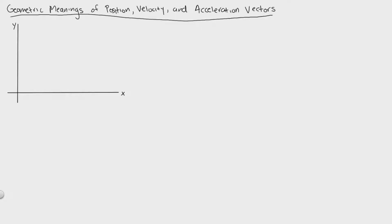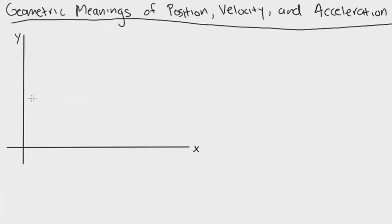Welcome back everybody. Today we'll be talking about the geometric meanings of position, velocity, and the acceleration vectors. To begin, we're going to have to know the path of a particle traveling through space. We're going to use this arbitrary path noted by this gray line, going from here to here.